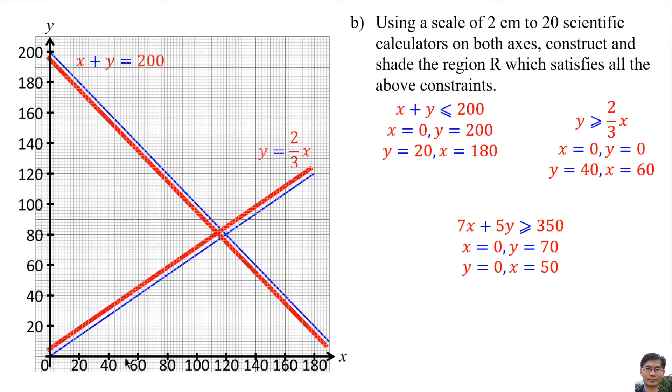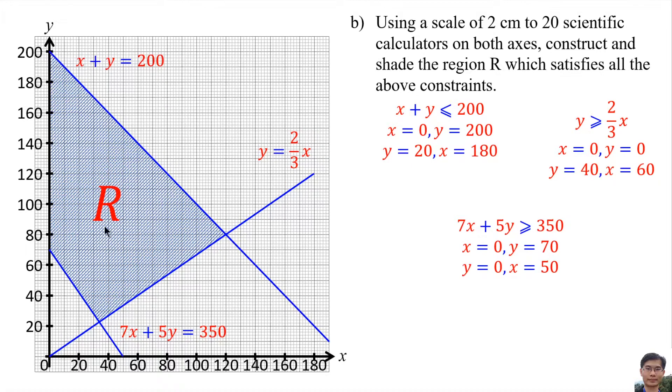So the shaded region should be this part and label it as R.